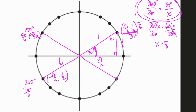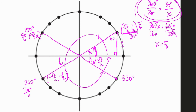This dot down here is 30 degrees short of a full rotation, so it's 330 degrees. Converting to radians, the denominator is still 6 and the numerator is 11, giving 11π/6. The ordered pair is positive x and negative y because we're in the fourth quadrant: (√3/2, −1/2).